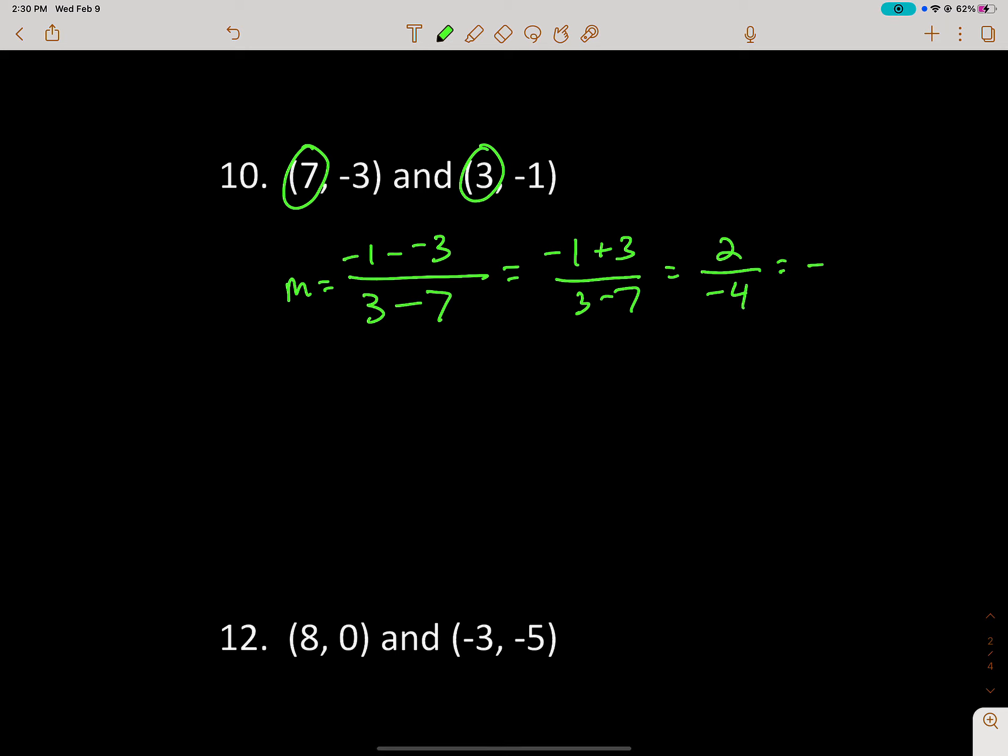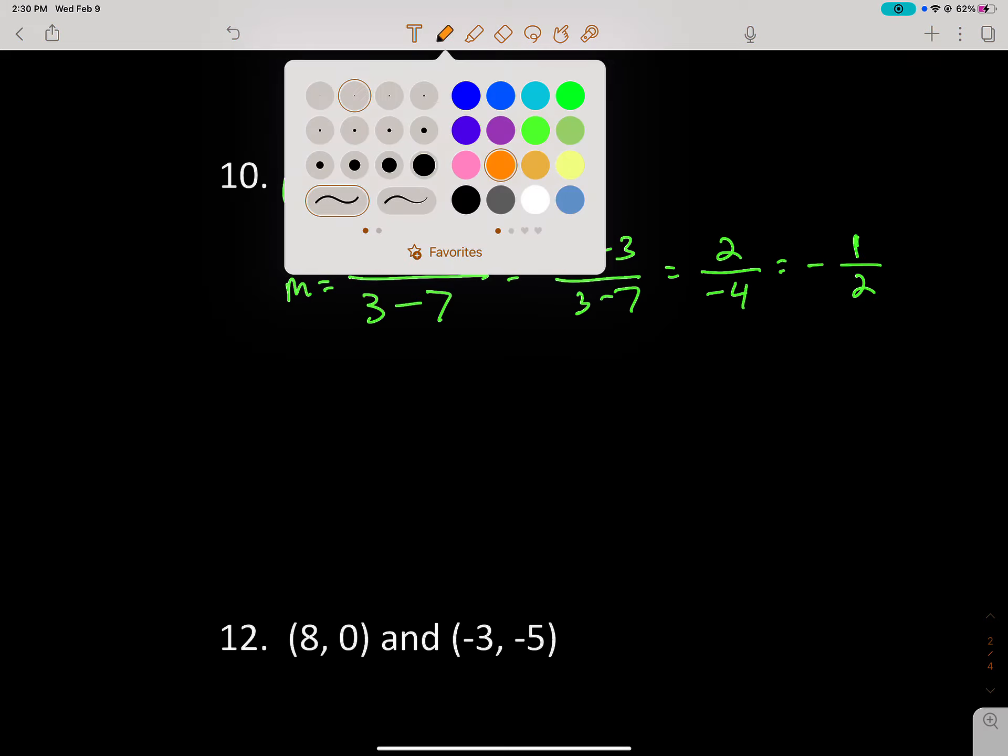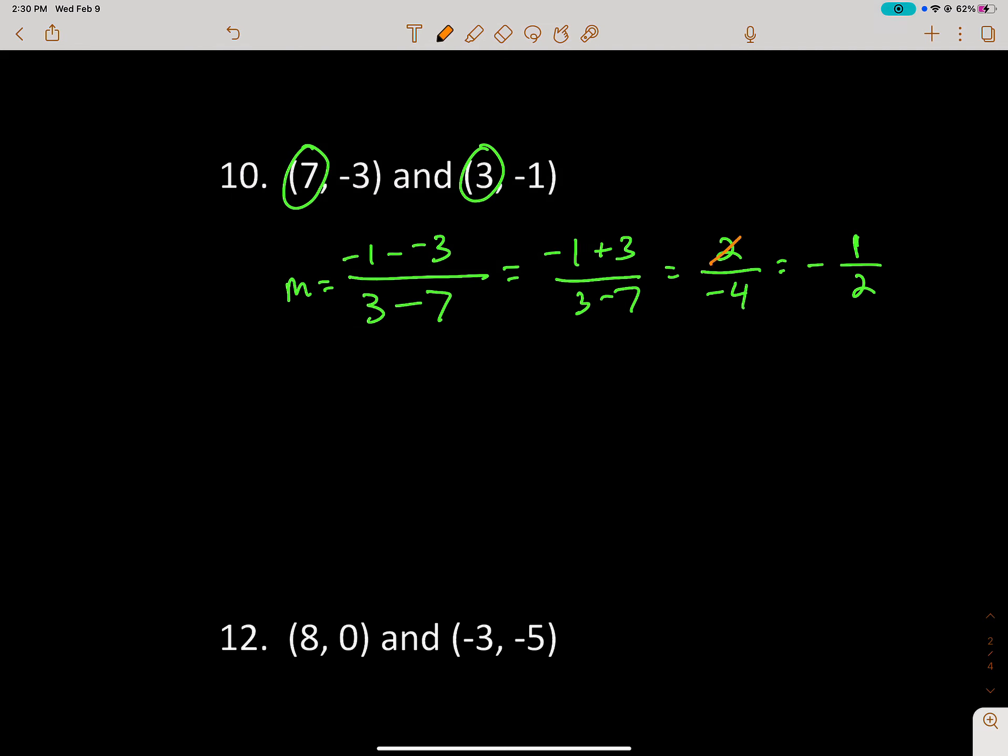A positive divided by a negative is a negative. I like to write it out in front. And then 2 over 4 reduces to 1 half because 2 goes into both of these. 2 goes into 2 once and 2 goes into 4 twice. So that would be negative 1 half.